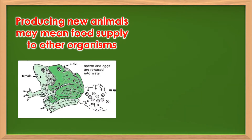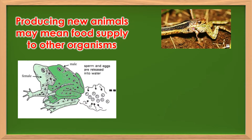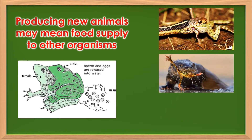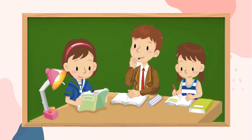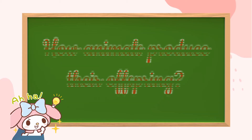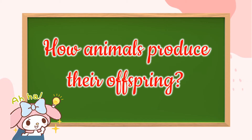Producing new animals may mean food supply to other organisms. It may also signal the continuous existence of certain species. This lesson will help you understand how animals produce their offspring or new young. Doing the different activities of this lesson will direct you to describe their reproduction depending on the level and type of animals.